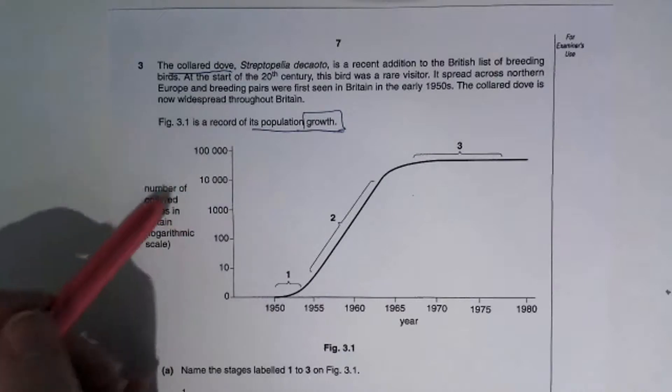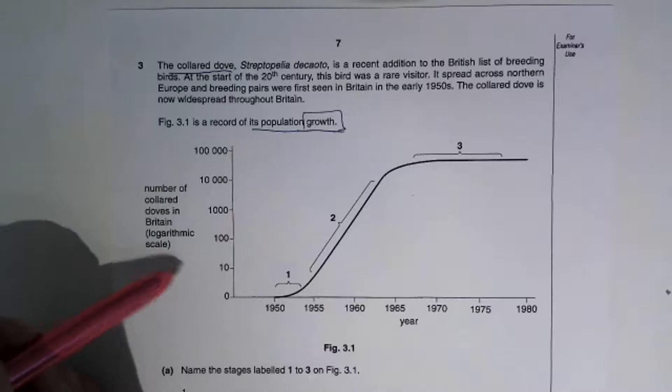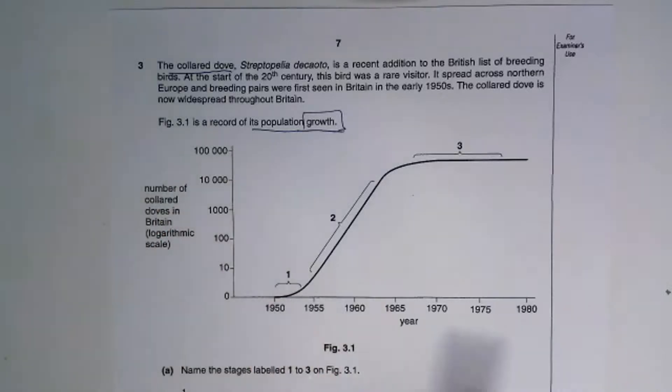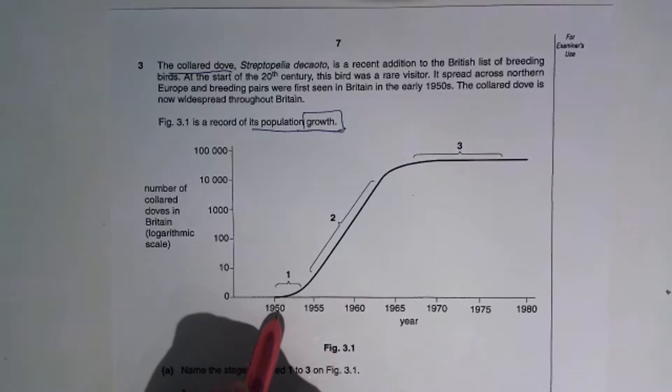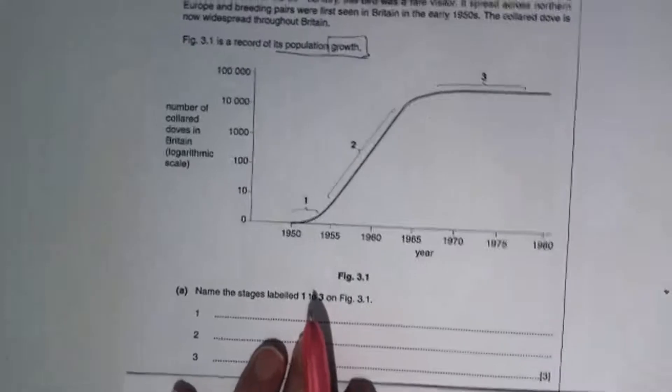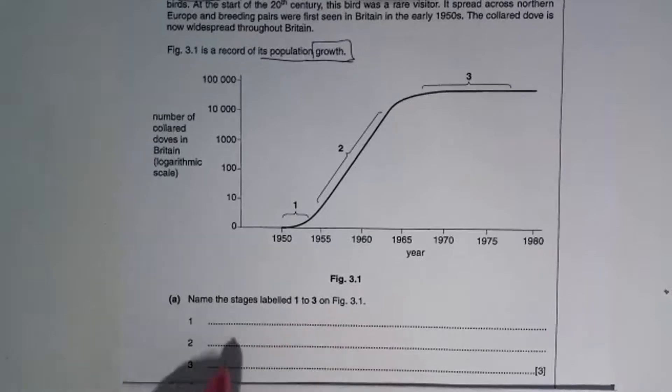We've got a graph where it says number of collared doves in Britain, and this is on a logarithmic scale. And we've got the year along the bottom. We're starting at 1950. We've then got three stages identified. Question then says name stages one, two and three and is worth three marks.